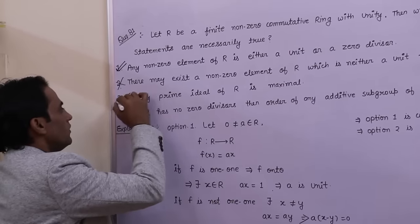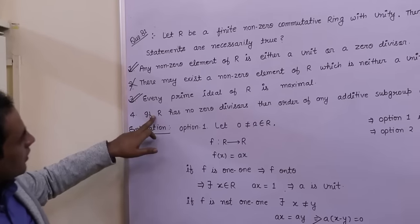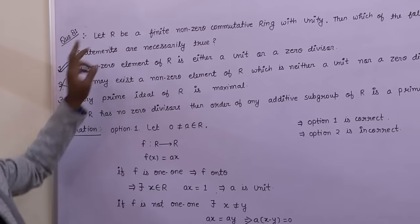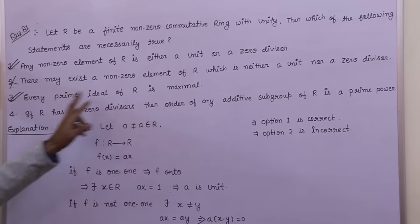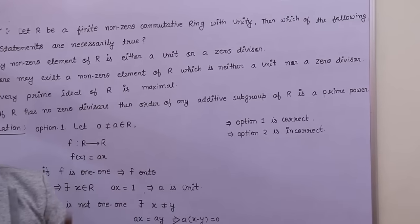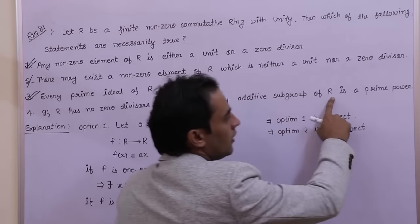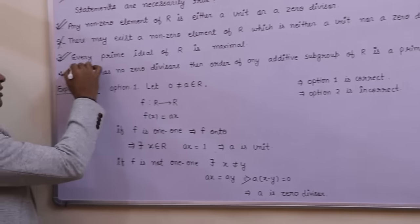And fourth: if R has no zero divisor, that is R is an integral domain, and the cardinality of finite integral domain is never divisible by two distinct prime numbers. Hence every additive subgroup of R has prime power order. So fourth option is also true.